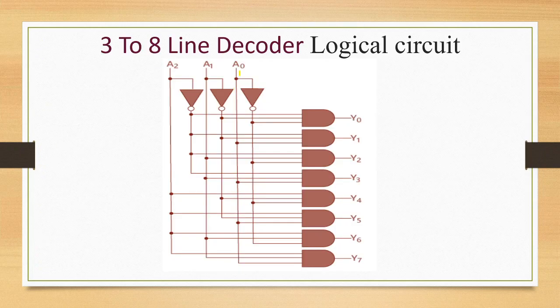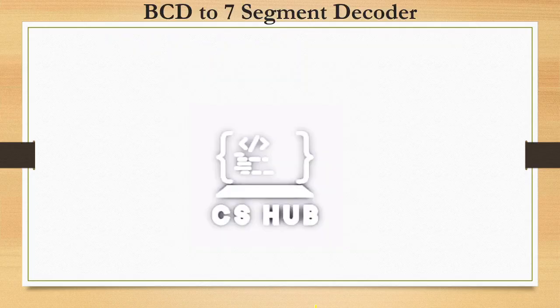The logical expressions for the 3-to-8 decoder follow the same pattern: Y0 = E · A2' · A1' · A0', and Y7 = E · A2 · A1 · A0. This gives us the logical circuit for the 3-to-8 line decoder.